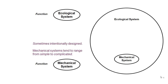At the lower end of the continuum we have mechanical systems. Sometimes intentionally designed, sometimes not, they range from the very simple to the very complicated. Like ecological systems, mechanical systems perform a function but have no purpose in and of themselves — the function they perform defines how they'll be used by others. Both ecological and mechanical systems are more or less functional, but they don't drive their own dynamic.